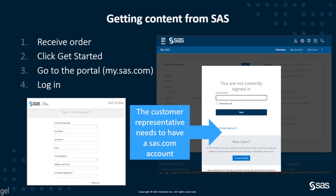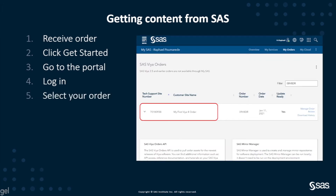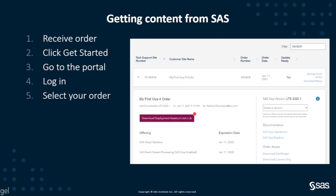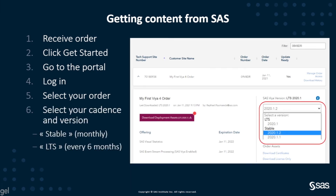Customers can also use SAS profiles to access resources from communities.sas.com, or to download tools and utilities from support.sas.com. Once you are logged in, you will see all the orders associated with your SAS profile. If you click on an order, you can see the details: products, expiration date, links to the documentation, and a drop-down menu to select the version.